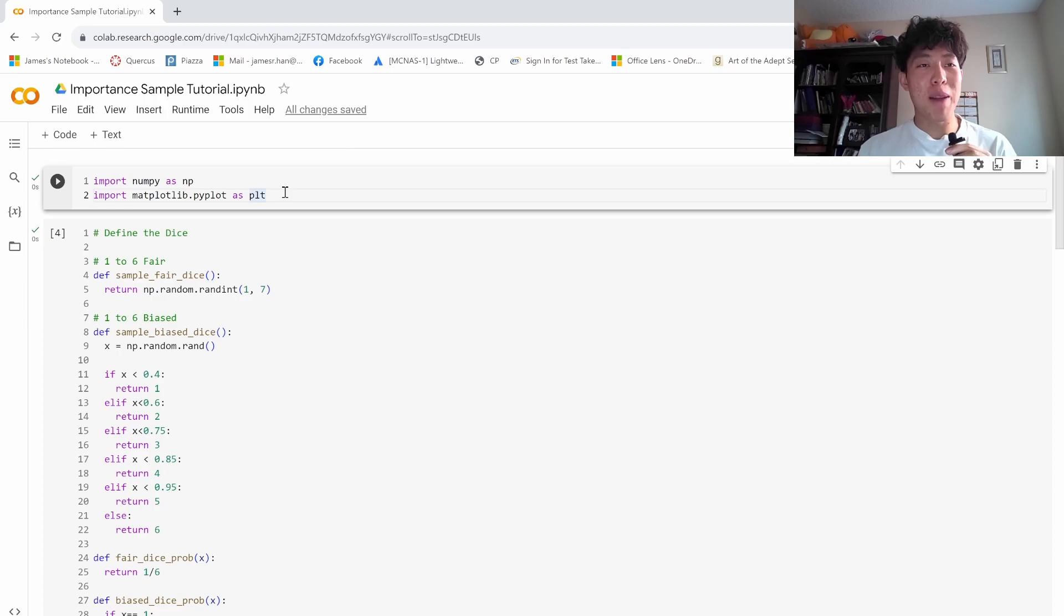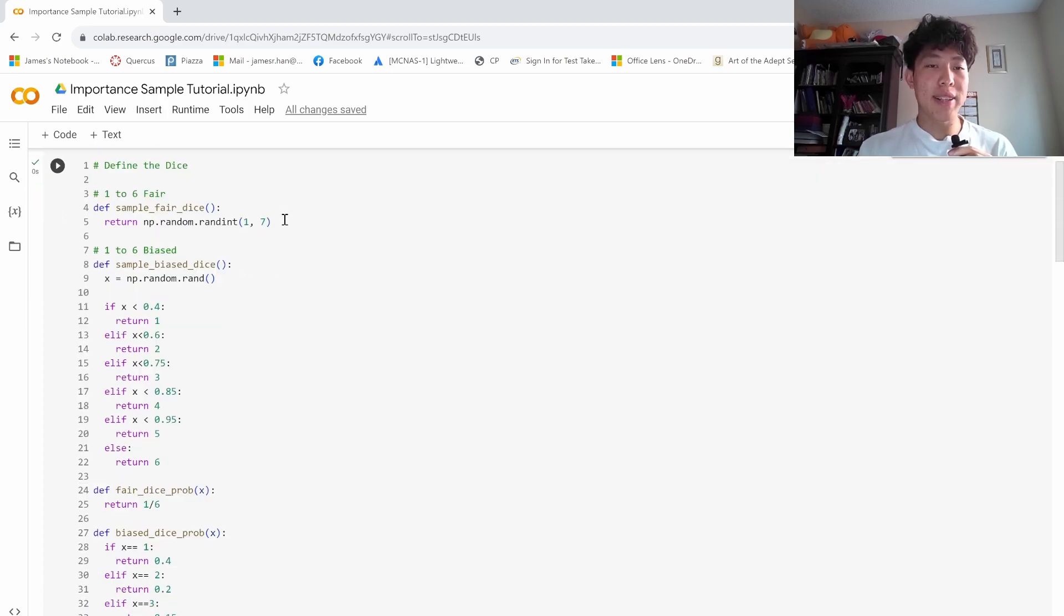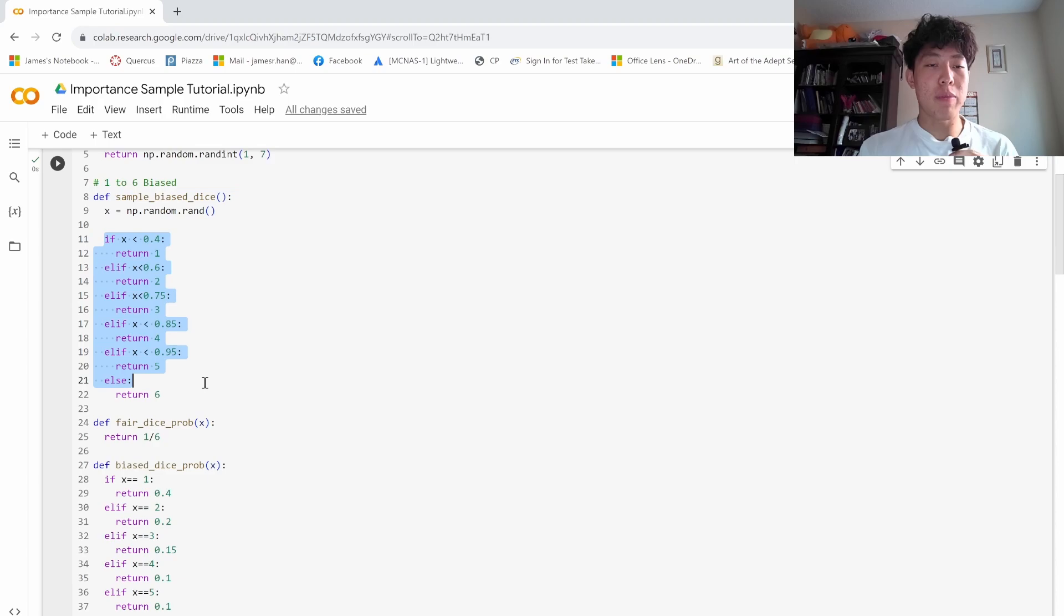Okay, time for an example, and I want to link this Google Colab down in the description. But we are tossing some dice. Here we have a fair dice that we can sample from, we also have this biased dice that we can sample from, and I manually coded up the probabilities here.